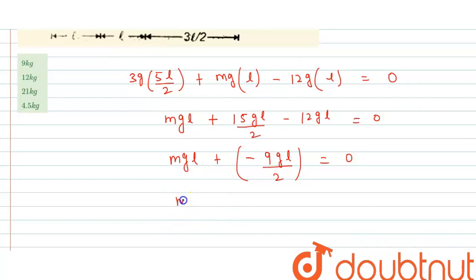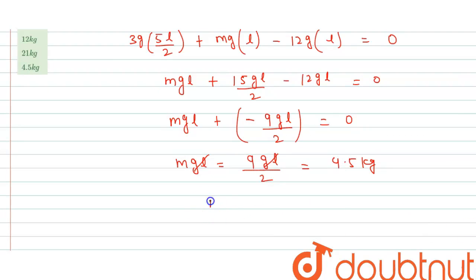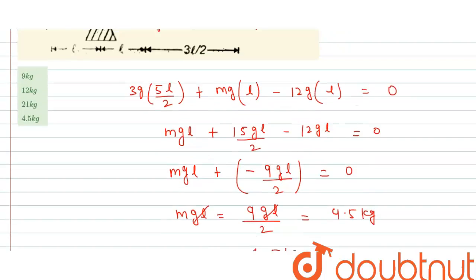So MgL equals 9gL/2. The gL cancels out, so M equals 9/2, which means 4.5 kg. The mass of this object is 4.5 kg.